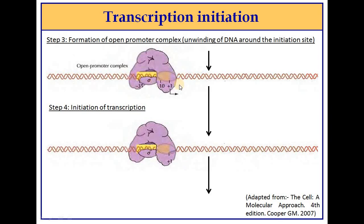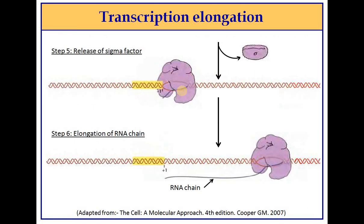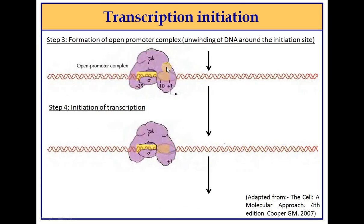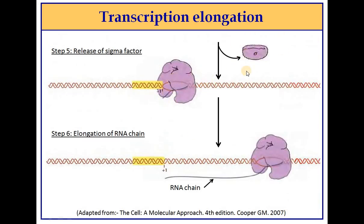The DNA segment opens to form an open promoter complex. As soon as the DNA opens up, polymerization starts — RNA polymerase begins synthesizing RNA. After around 10 nucleotides are added, the sigma subunit is released. Then RNA polymerase continues on its own, and elongation begins. We have now seen closed promoter complex formation, then open promoter complex, RNA polymerization start, and elongation — during which the sigma subunit dissociates.